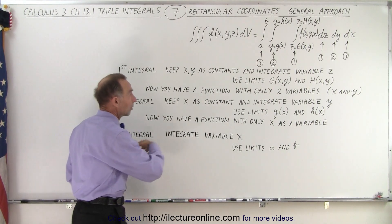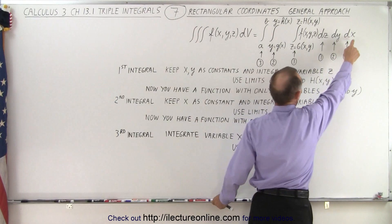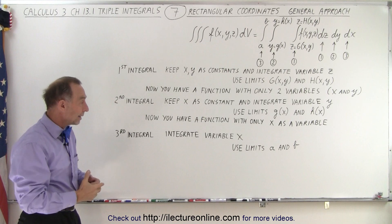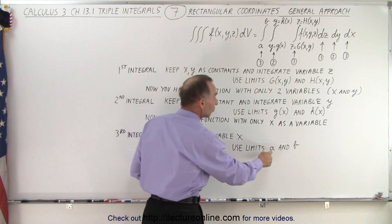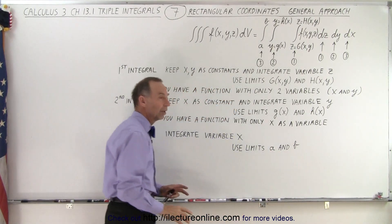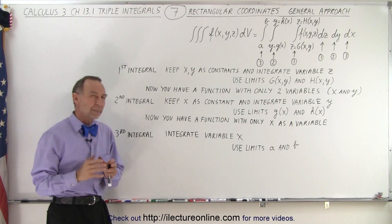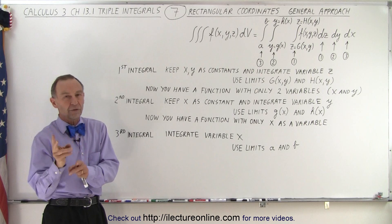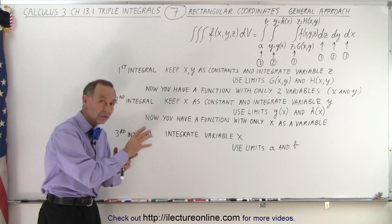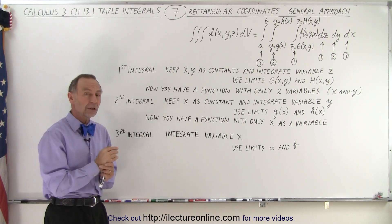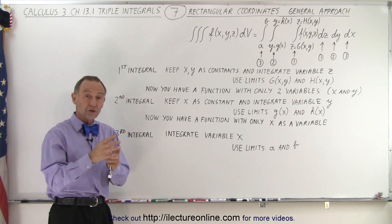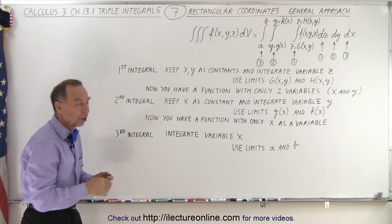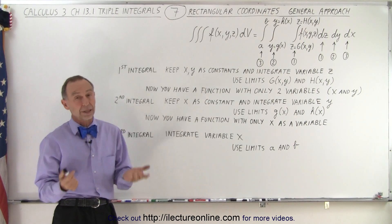Then the third integral, now you're going to integrate over x. And when you do that, you get some expression in terms of x. And then typically the limits will be constants. You're going to integrate from a to b. So the third integral typically has constants as its limit. The first integral usually has functions of the other two variables. The second integral is going to be a function of one variable. So that's kind of the general approach of how we deal with triple integrals.